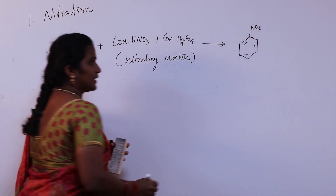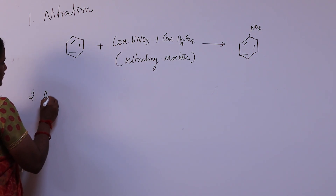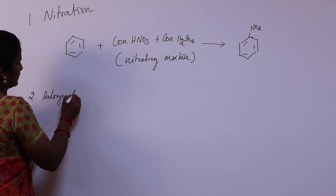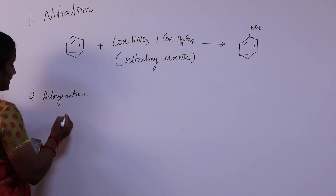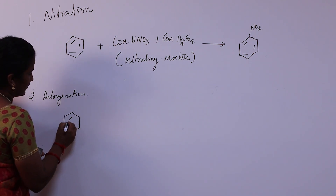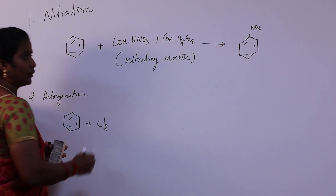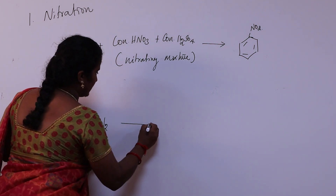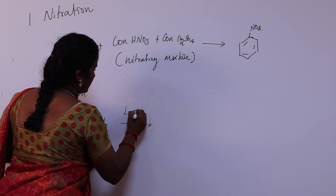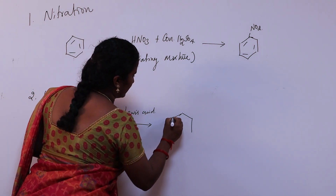The second type is halogenation. The benzene ring reacts with a halogen — for example, chlorine — in the presence of a Lewis acid as a catalyst. The product formed is chlorobenzene.